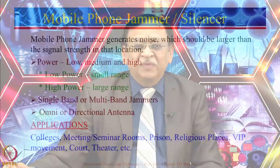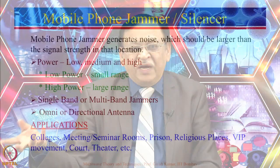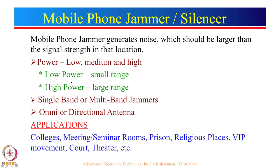When there are too many mobile phones, there is a requirement for a jammer — also given the name silencer. A mobile phone jammer basically generates noise which is larger than the signal strength in that particular location, so the mobile phone gets confused and shows no network. There can be different types: low power, medium power, and high power.